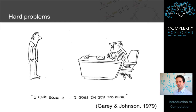Prior to the 1970s, if you had a computational problem you needed to solve that seemed to be hard but for which you knew there was an algorithm — so it wasn't uncomputable — you more or less just threw your hands up and said, this is a hard problem, I don't know how to do any better than this. But in the 1970s came a revolution in ideas that allowed you to do much better.